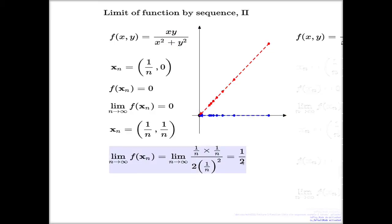So across two different sequences, the function delivers two different limits. According to the theorem we just discussed, such a function cannot possibly have a limit at the origin. Because if it does, it must have a limit across every possible sequence identical to each other. And here we have two different limits across two different sequences.